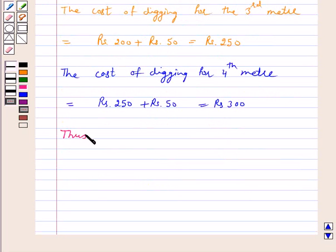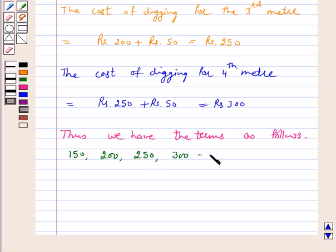Thus we have the terms as follows: 150, 200, 250, 300 and so on. Now see 200 is obtained by adding 50 to 150, again 250 is obtained by adding 50 to 200, again 300 is obtained by adding 50 to the preceding term that is 250.